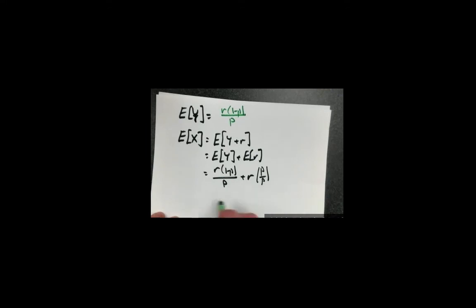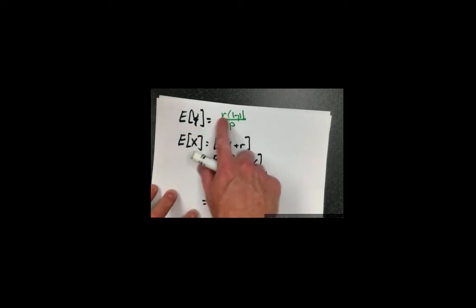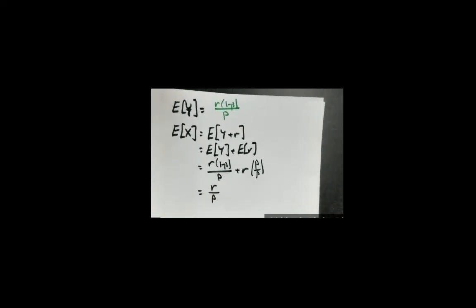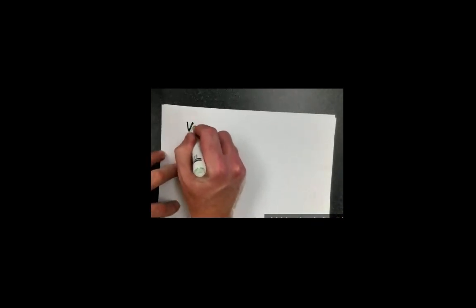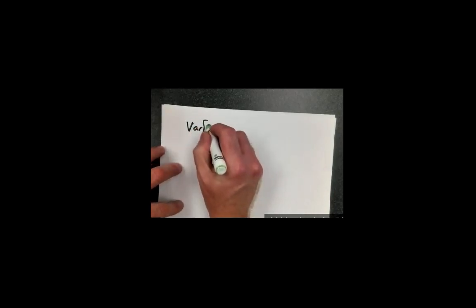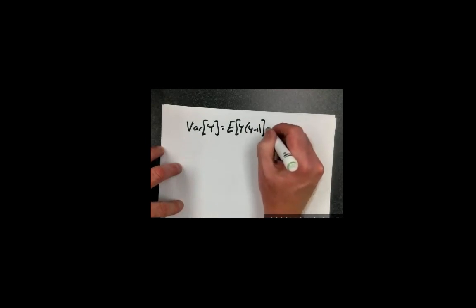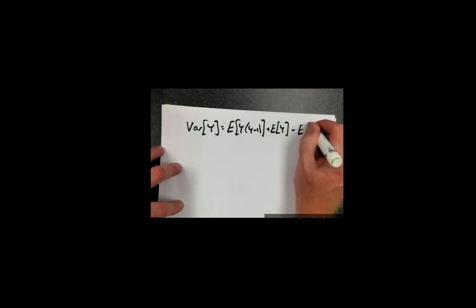So the expected value of Y — the number of failures until we observe r successes — is r times (1 minus p) over p, whereas the expected value of the total number of trials X to observe r successes is r divided by p. That gives us the proof for the mean of the negative binomial distribution. While I'm not going to walk through the proof for the variance here, the approach is similar. The variance of Y equals E[Y(Y-1)] plus E[Y] minus (E[Y]) squared.